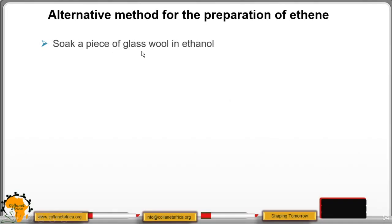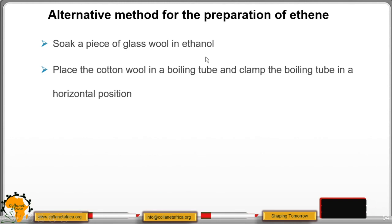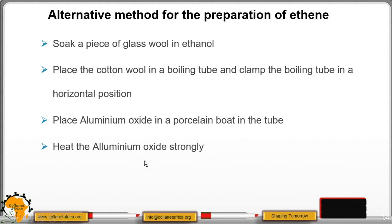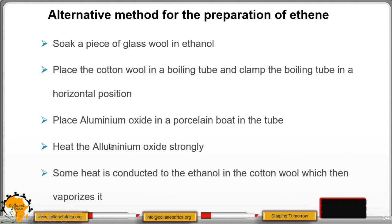Soak a piece of glass wool in ethanol. Then place the cotton wool in a boiling tube and clamp the boiling tube in a horizontal position. Place aluminum oxide in a porcelain boat in the tube. Heat the aluminum oxide strongly. Some heat is conducted to ethanol in the cotton wool which then vaporizes it.